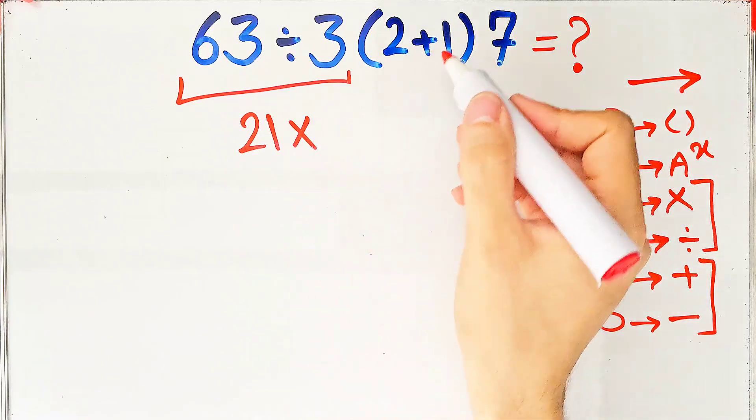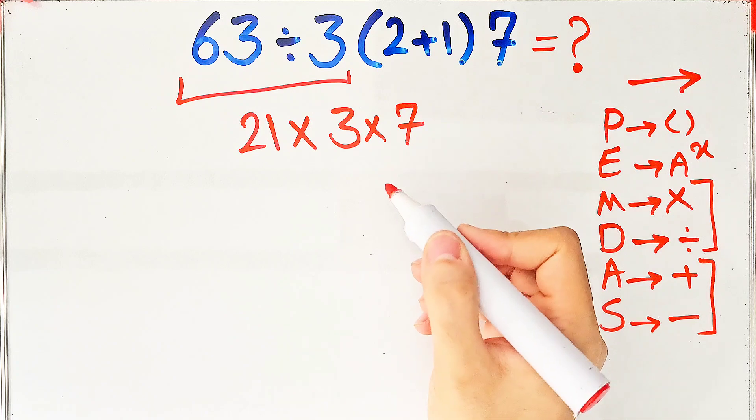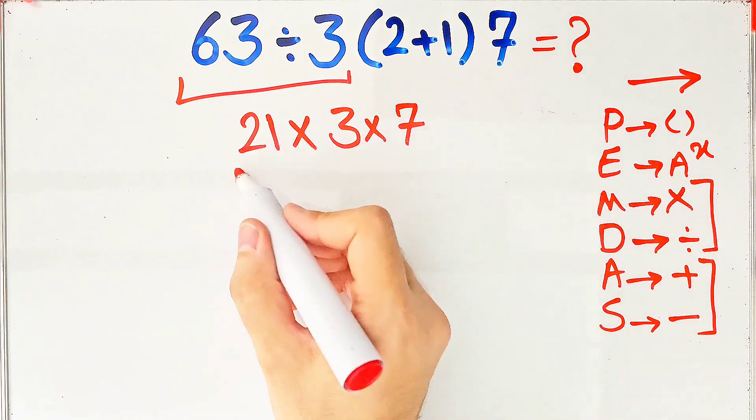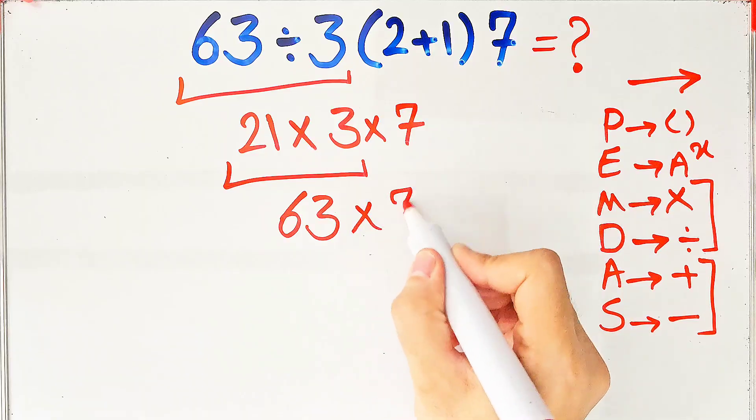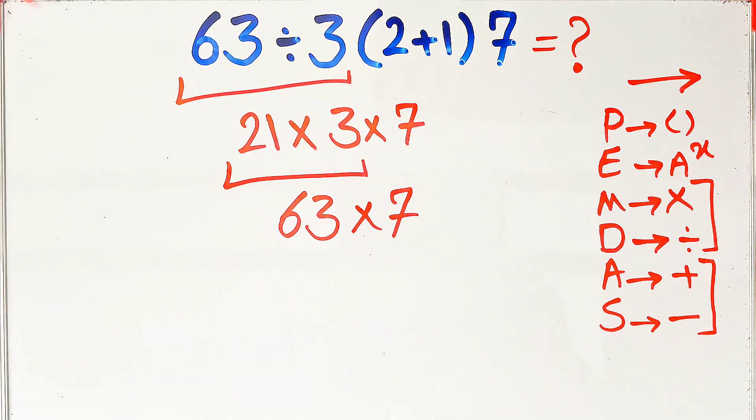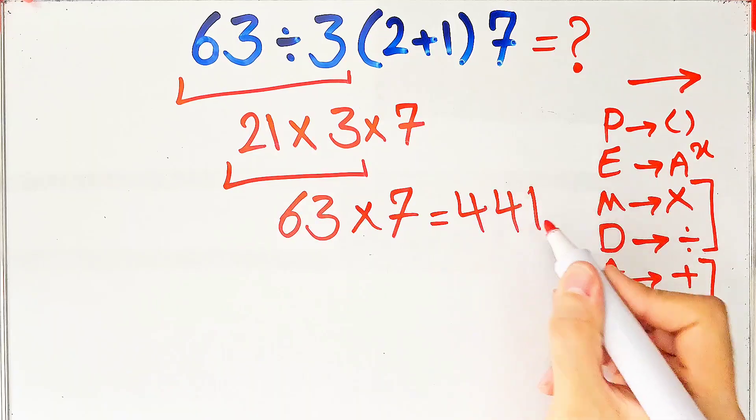63 divided by 3 equals 21. 21 times 3, then times 7. 21 times 3 equals 63, and 63 times 7 equals 441. The final answer to this question equals 441.